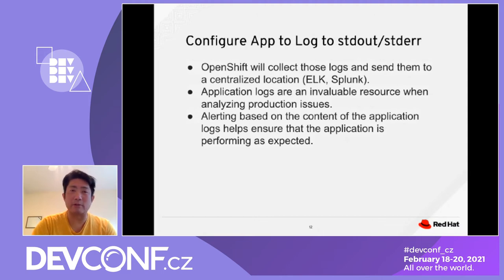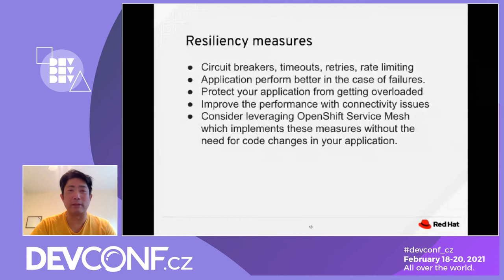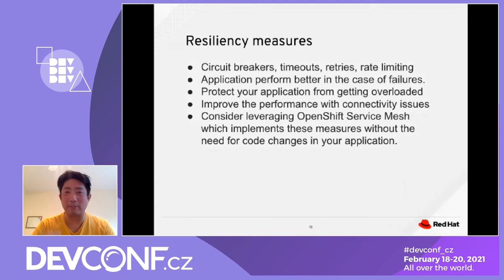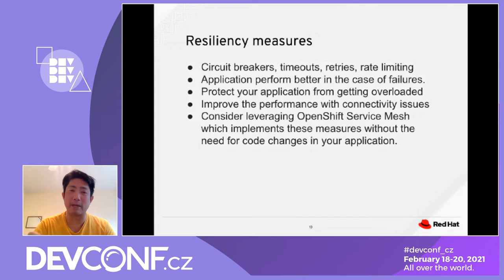Resiliency measures such as circuit breaker are important. If you retry too many times, you definitely need a circuit breaker to avoid a DoS attack. Timeout, retry, and rate limiting help the application perform much better in case of failure. You need to protect your application from getting overloaded. You can improve performance with connection issues, and also consider leveraging OpenShift Service Mesh.